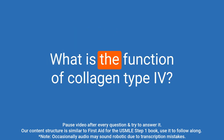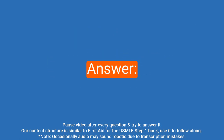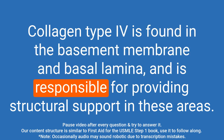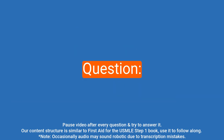Question: What is the function of collagen type IV? Answer: Collagen type IV is found in the basement membrane and basal lamina and is responsible for providing structural support in these areas.